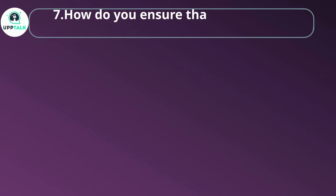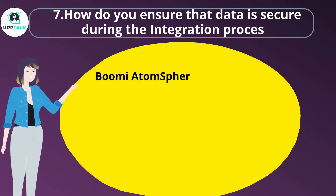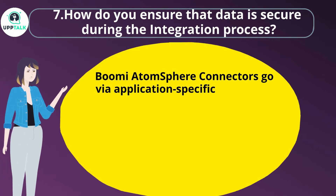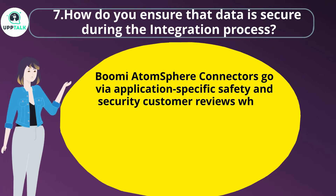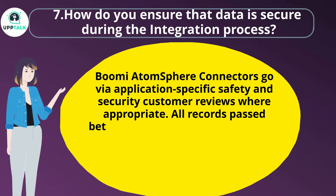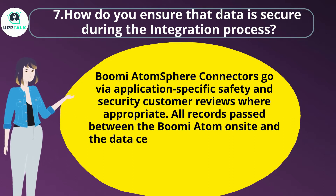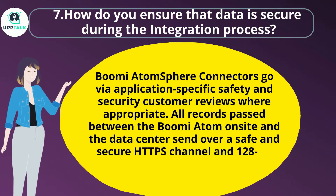Question 7: How do you ensure that data is secure during the integration process? Boomi Atmosphere connectors go via application-specific safety and security customer reviews where appropriate. All records passed between the Boomi Atom on-site and the data center are sent over a secure HTTPS channel with 128-bit file encryption.